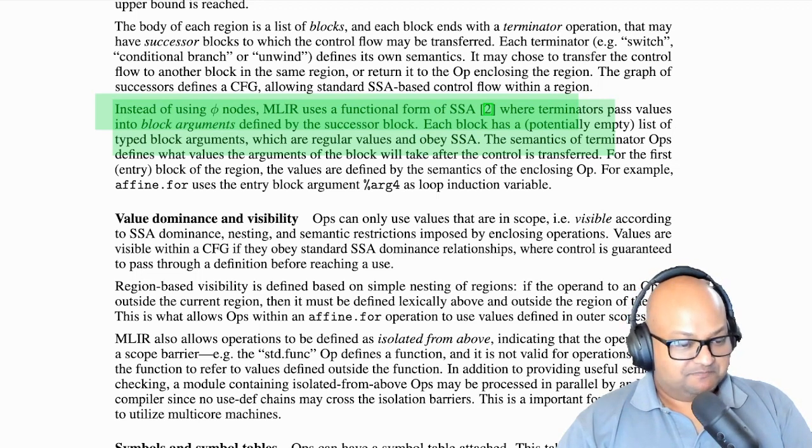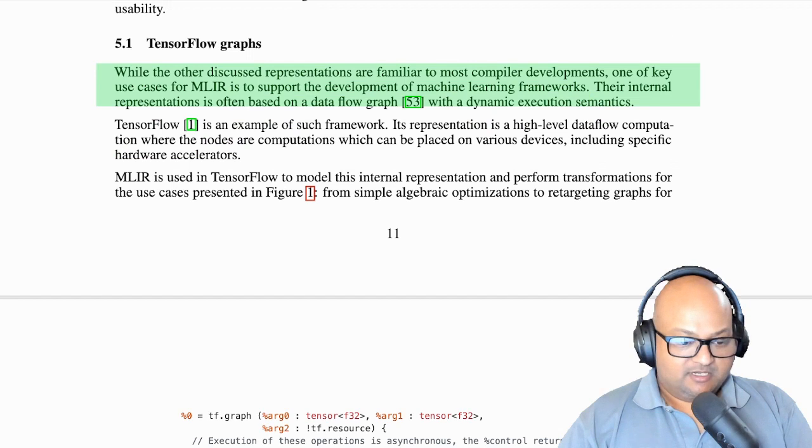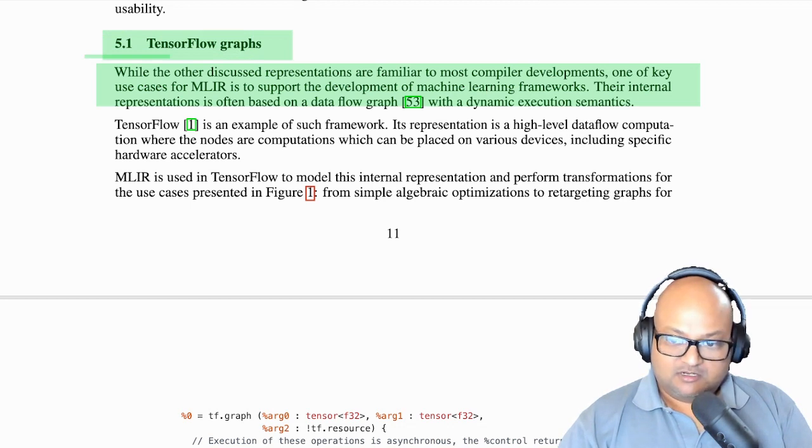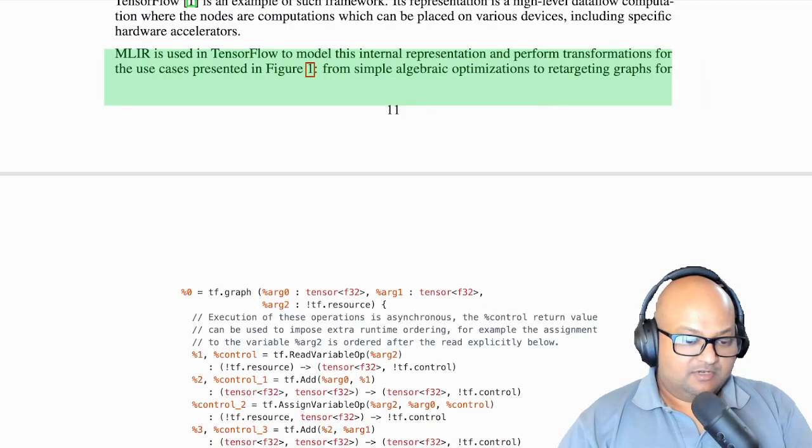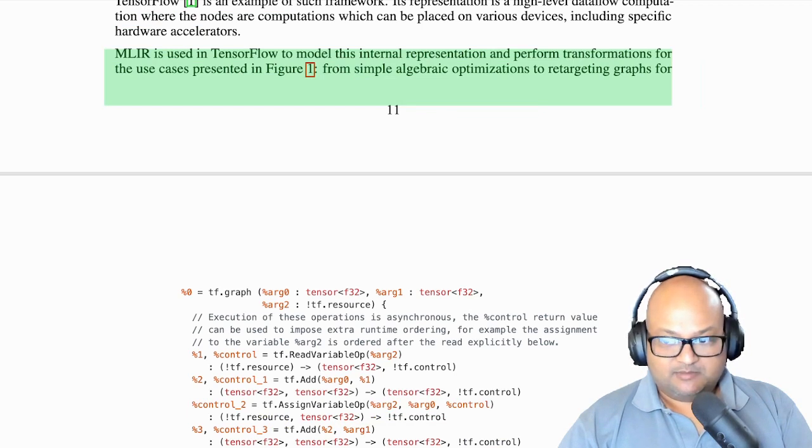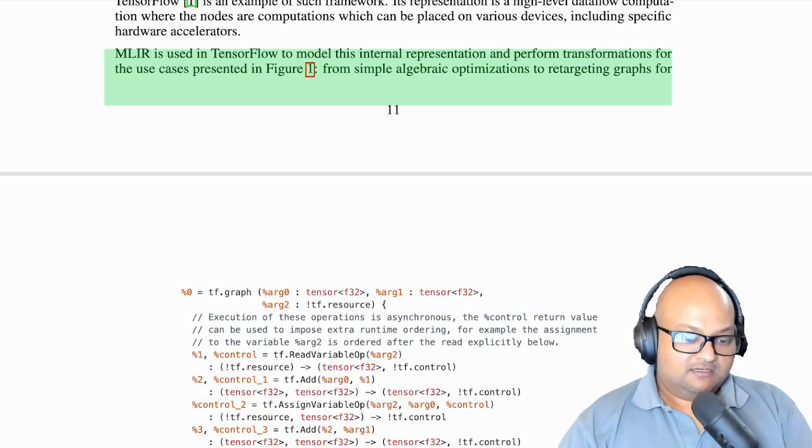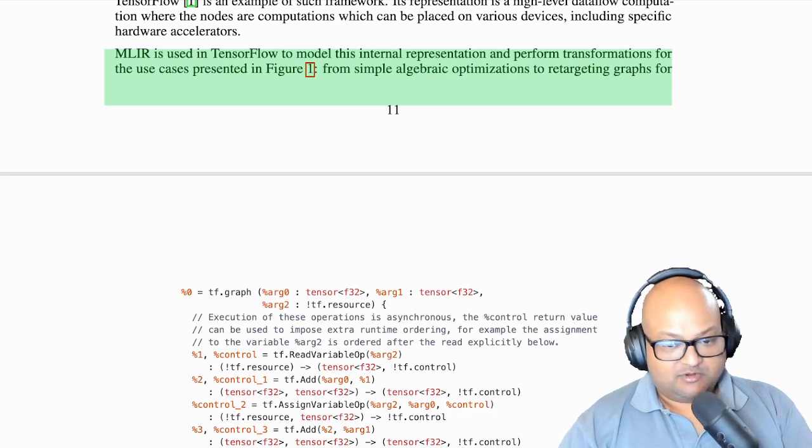Now MLIR is pretty new infrastructure and one of the main domains where it is currently being used is machine learning and especially for TensorFlow graphs. The way TensorFlow's internal model works is a very good fit for MLIR because it is based on a data flow graph and it has very dynamic execution semantics. If you express your TensorFlow logic as MLIR, you can then treat optimization and retargeting as a compiler problem.